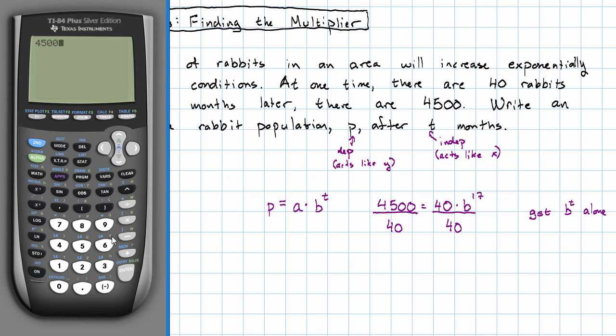So, 4,500 divided by 40. The number we have at this point is always going to be rational, so we shouldn't round it in the middle of the problem. But now, we're trying to answer the question, what number to the 17th power gives me 112.5?